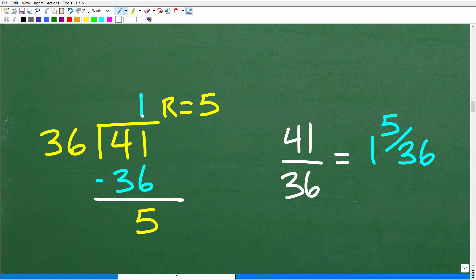So that's 1 times 36. Subtract the 36, we have 5. So we have remainder 5. So 41 divided by 36 is 1 remainder 5.